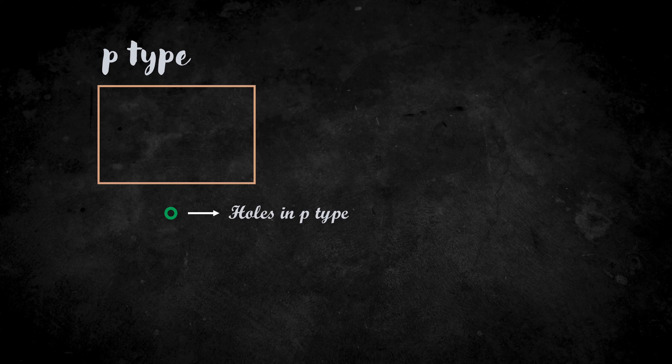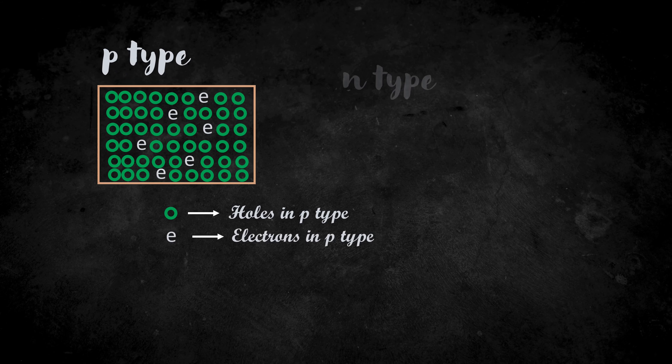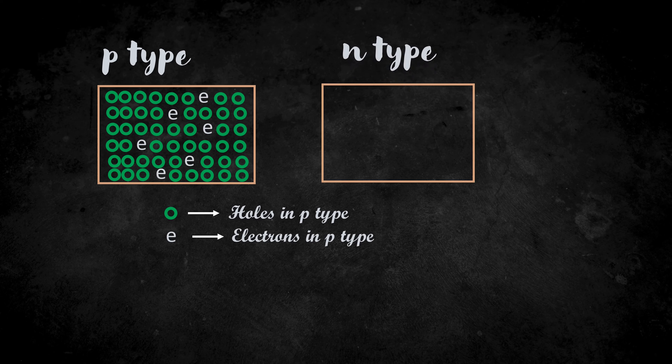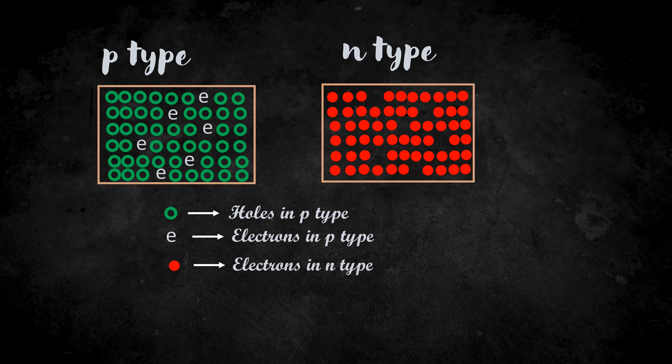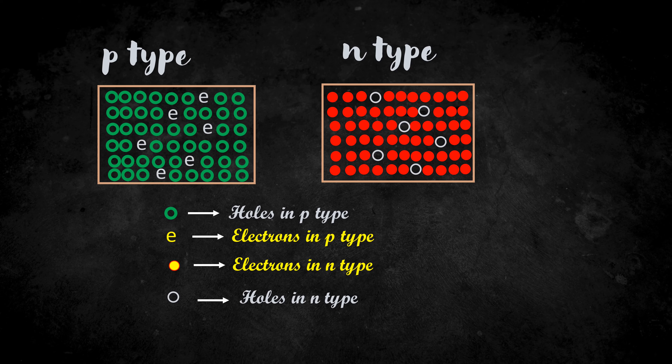Now let's summarize the P-type and N-type semiconductor. First, the P-type: its majority carriers are holes and the minority carriers are electrons. Now the N-type: its majority carriers are electrons and its minority carriers are holes. Both the electrons in P-type and N-type are the same. Just to show the difference of majority and minority carriers, I have used different notation — one as small 'e' and the other as a red dot. The same applies to the holes.